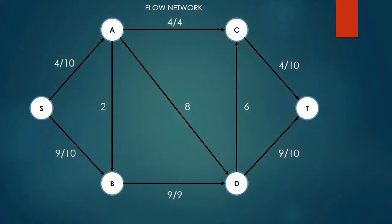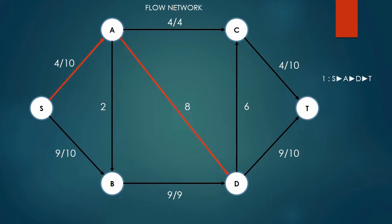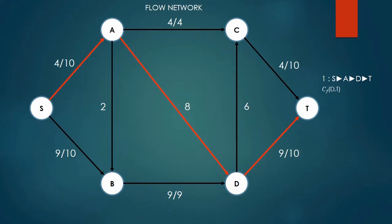Now we look at the next shortest path in the flow network. In this case, we're going to look at the path from S to A to D to T. Edge S to A is 4/10 full, so we have 6 units of flow available. Edge A to D has 8 units of flow available, and edge D to T is 9/10 full, so we only have 1 unit of flow available. So the minimum weighted edge is D to T, which has available capacity of 1.